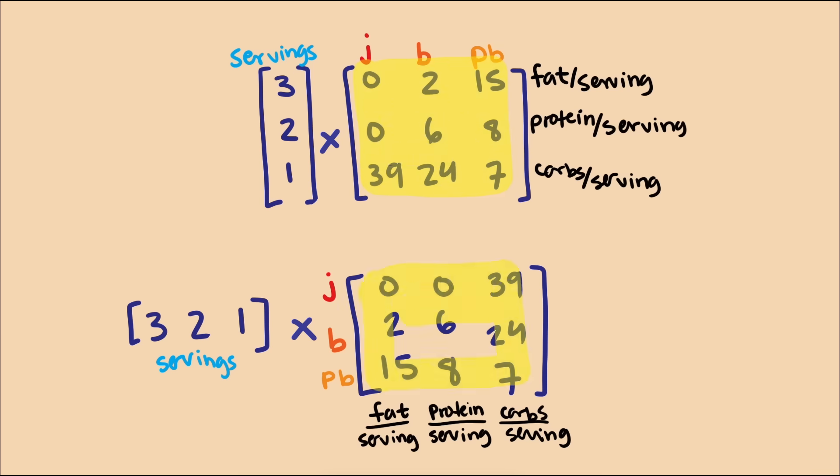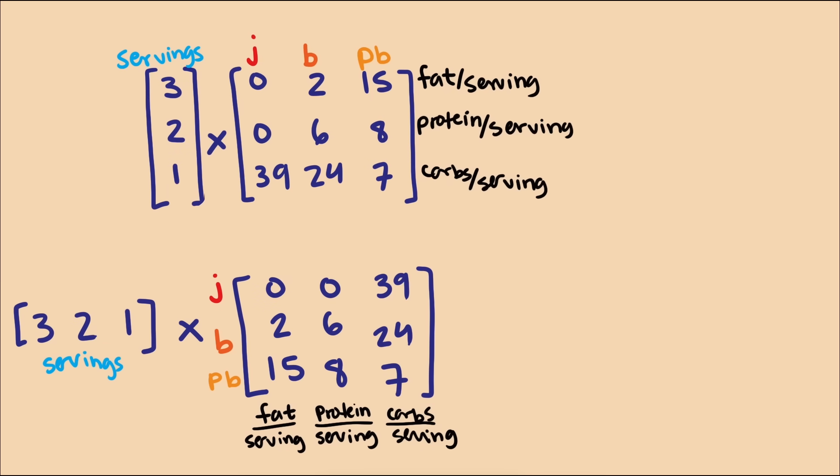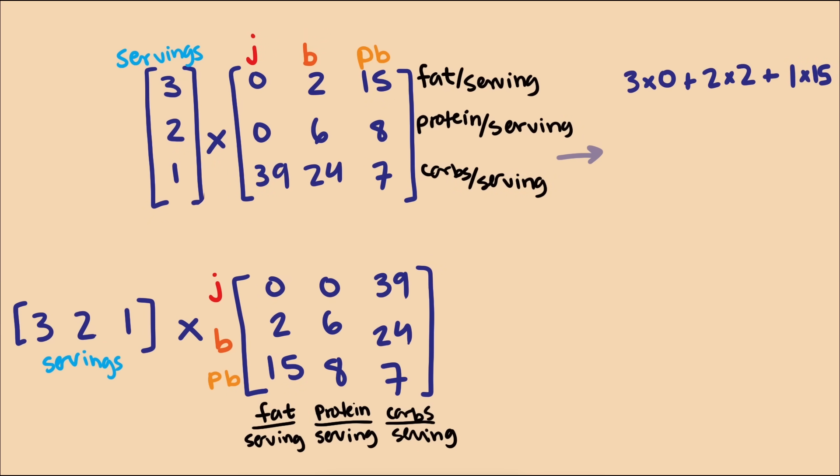We have a matrix of grams per serving, a vector of servings, and we want total grams. So calculating the total grams for each nutrient, protein, fat, and carbs, boils down to taking three simple dot products.